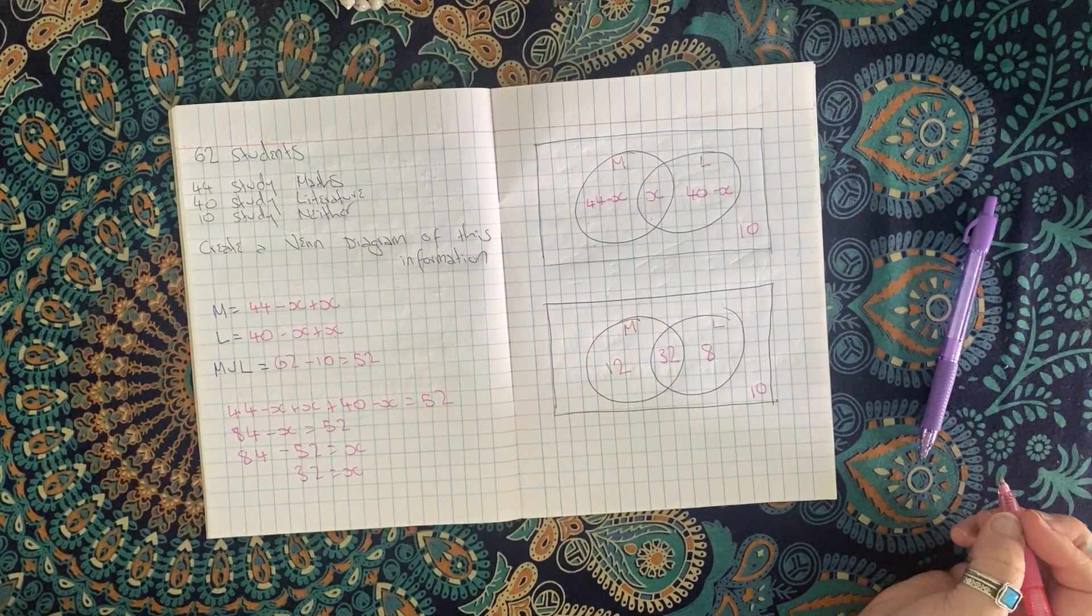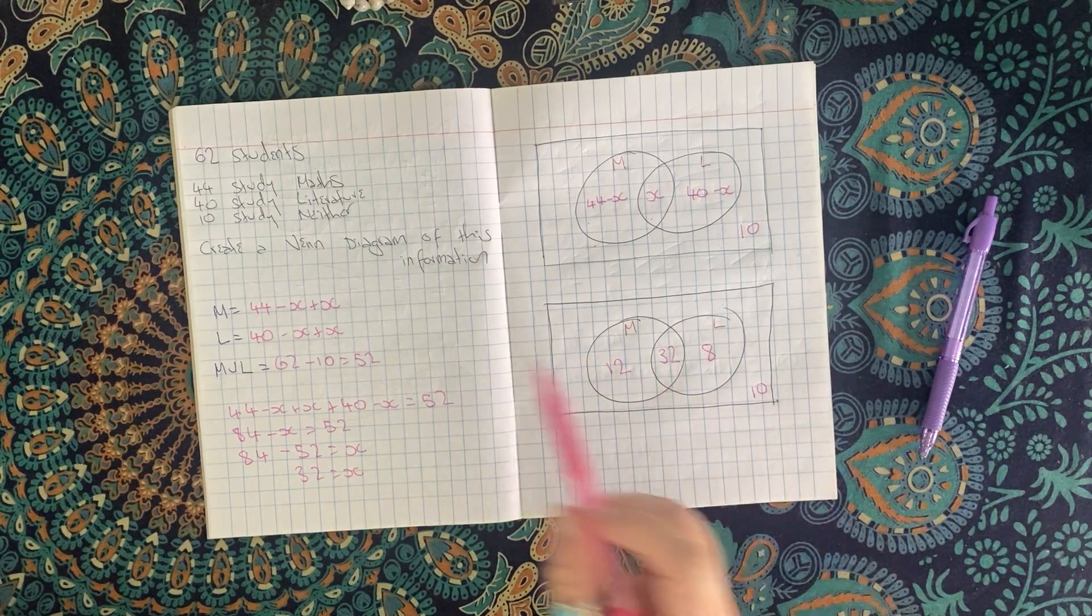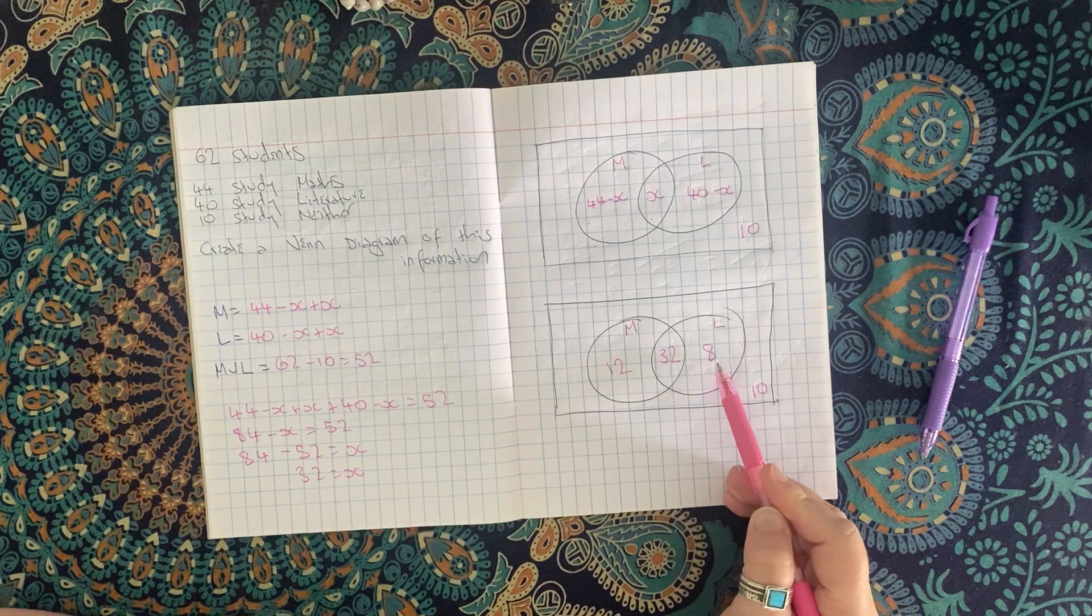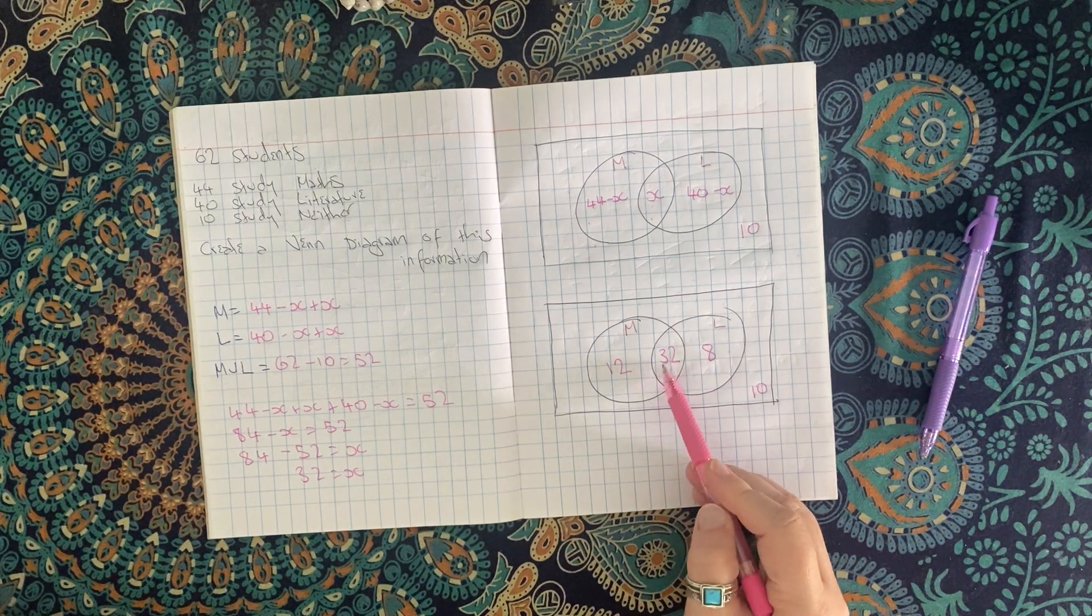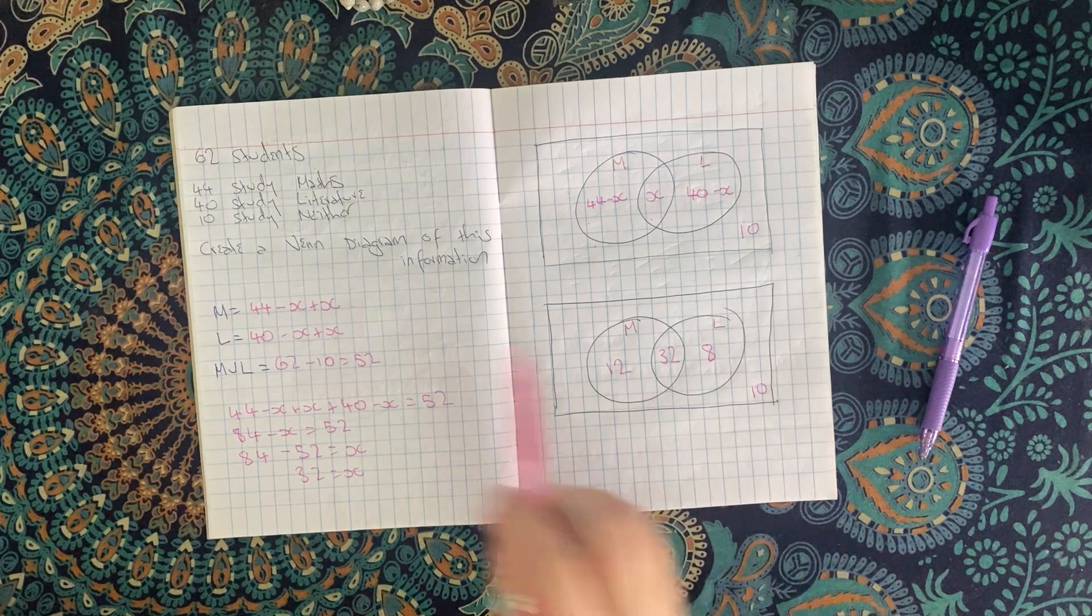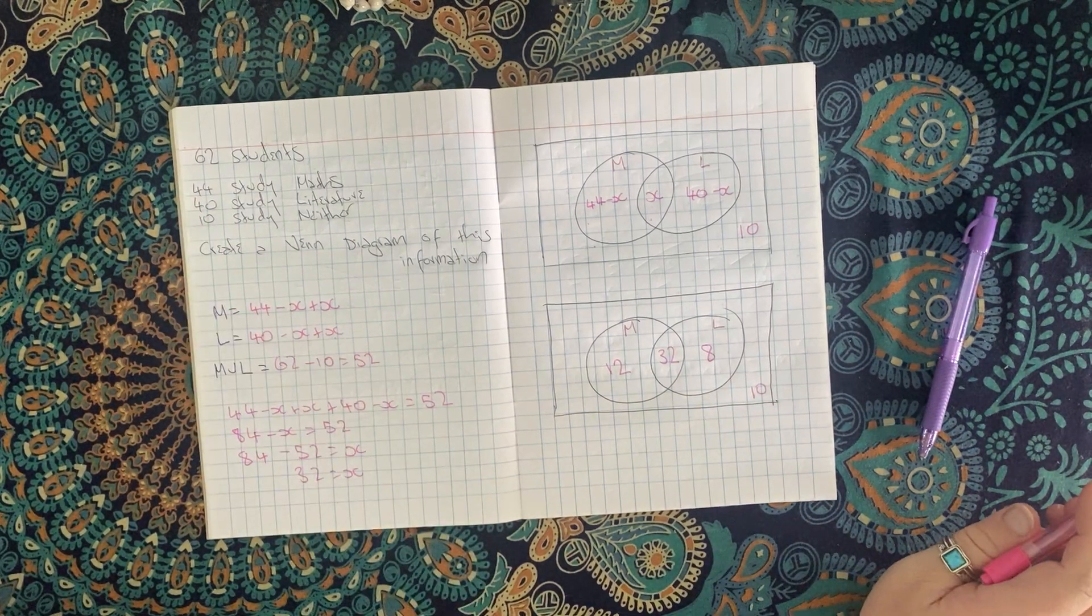So if I'm not sure if I've done this right, I can add these up and I should get 62, right? 12 plus 8 is 20. 20 plus 32 is 52, exactly what we wanted, plus 10 is 62. And I ended up with my 62 students.